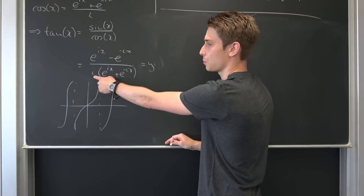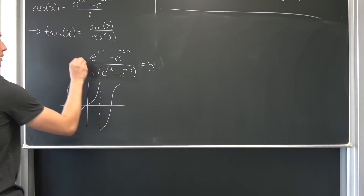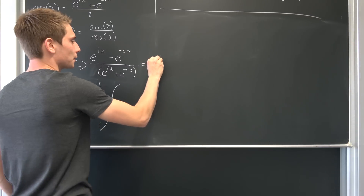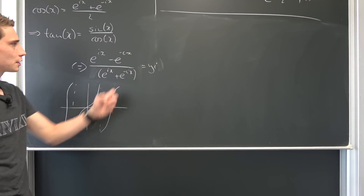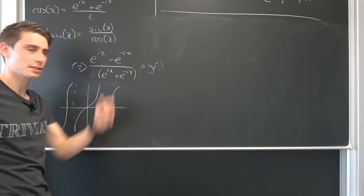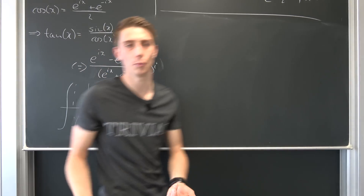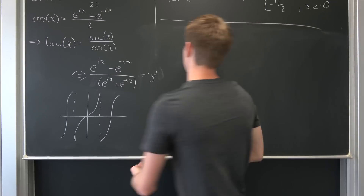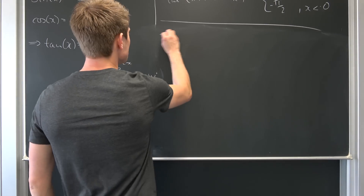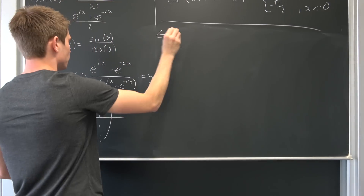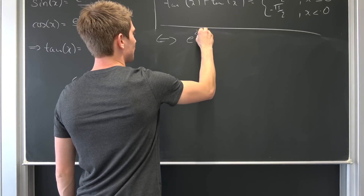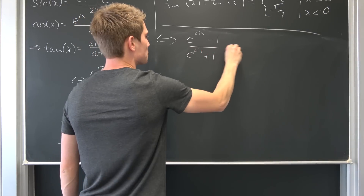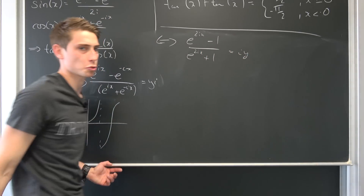So why not multiply both sides by i? Multiplying both sides by i gives us i·y. Then we can factor out e^(−ix) on both the numerator and denominator, and we end up with e^(2ix) − 1 over e^(2ix) + 1 being equal to i·y.